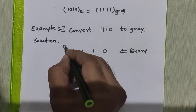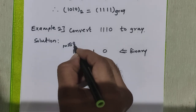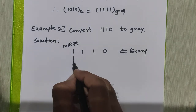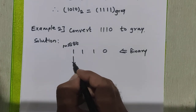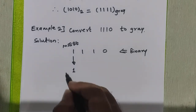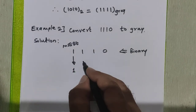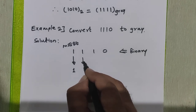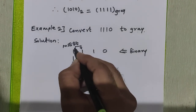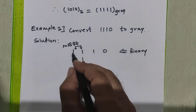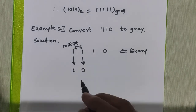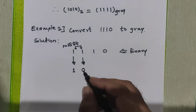The first step is we have to copy the first MSB bit as it is into the grey code. After this, to get the next grey equivalent, we add the first binary bit with the second binary bit. So 1 plus 1 is 0, and carry 1 is generated — we will ignore that carry.